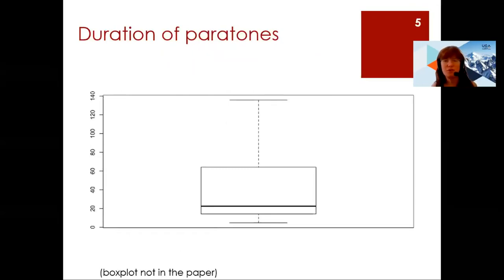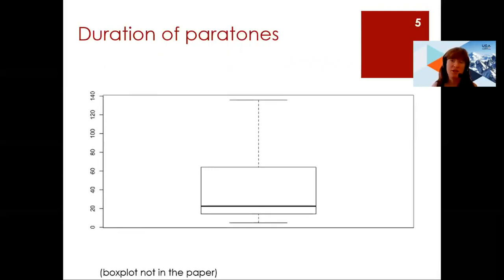Here is one way to visualize the duration of the peritones. In the box plot, the bold horizontal line is at about 20 seconds, which represents the median duration — so half of the peritones are below 20 seconds.